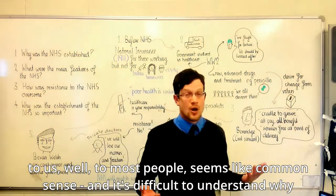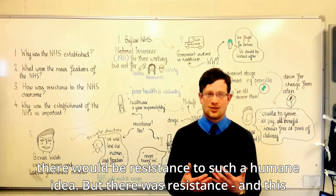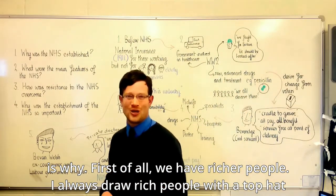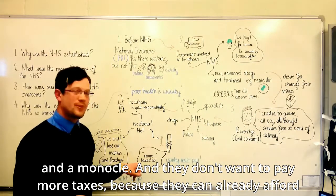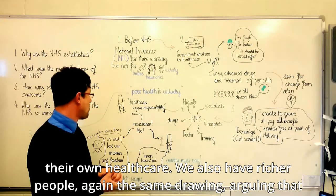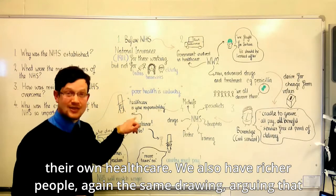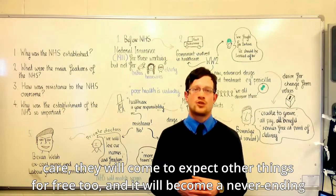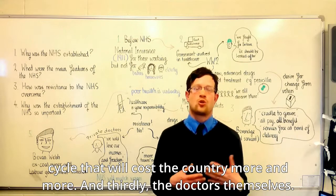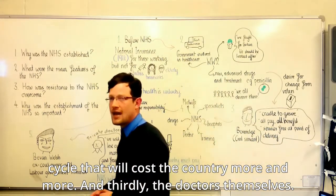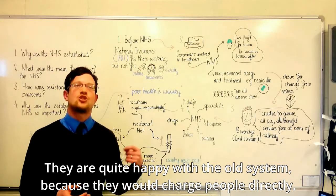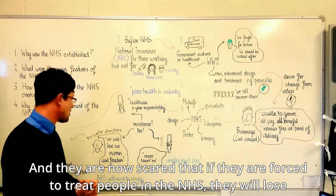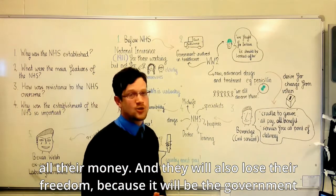This may seem like common sense, but there was resistance. First, richer people didn't want to pay more taxes because they could already afford their own healthcare. Also, richer people argued that healthcare is a personal responsibility — if you give people free healthcare, they will come to expect other things for free too, in a never-ending cycle costing the country more and more. Thirdly, the doctors themselves were quite happy with the old system because they charged people directly. They were scared that if forced to work in the NHS, they would lose their money and also their freedom, with the government telling them what to do.